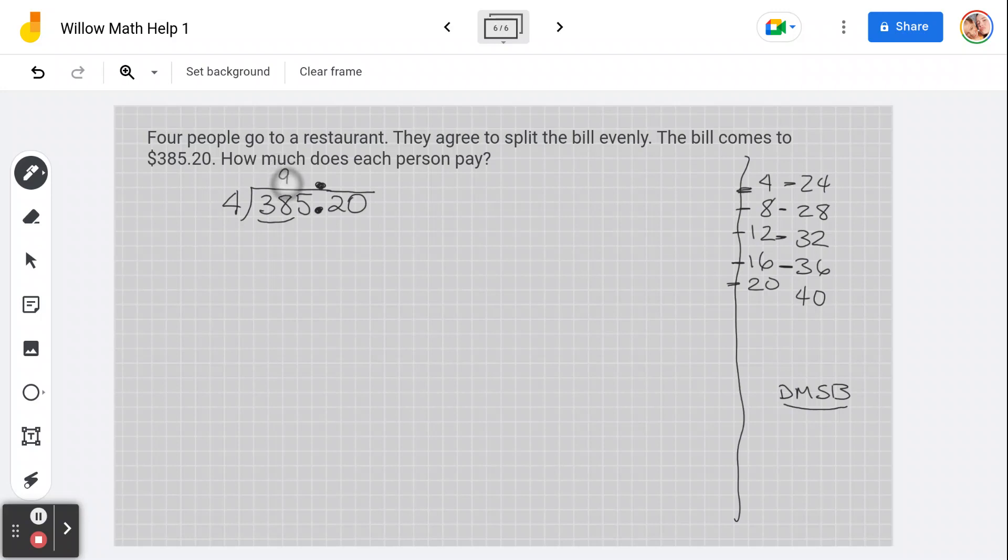Now look where I put my 9. Remember, it went into 3 zero times. So now I put my 9 there. Doesn't seem important, but it kind of is. Keep your numbers neat.